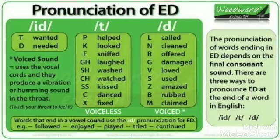For example, the verb 'help' ends with 'p', which is a voiceless sound. So we will use the voiceless T. For example: helped, locked, sniffed, laughed, washed, watched, kissed, danced, fixed.